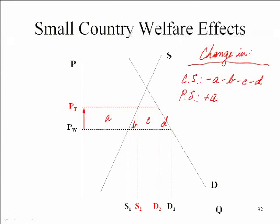Think about what this means: we import because quantity demanded domestically is always greater than quantity supplied. At any price below autarky, the demand curve lies to the right of the supply curve. So when you increase the price, consumers will always be hurt more than producers will benefit. The government also collects tariff revenues — area C — which equals the size of the tariff times the reduced volume of imports. So government revenue increases by area C.